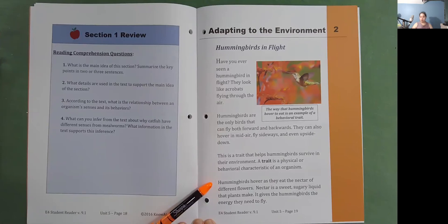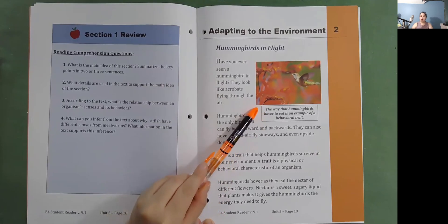Hummingbirds hover as they eat the nectar of different flowers. Nectar is a sweet, sugary liquid that plants make. It gives the hummingbirds the energy they need to fly. The way that hummingbirds hover to eat is an example of a behavioral trait.